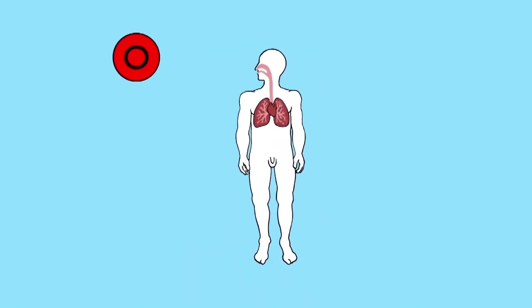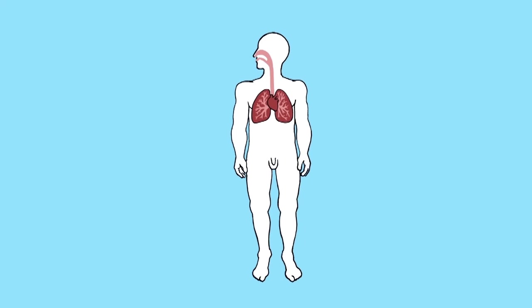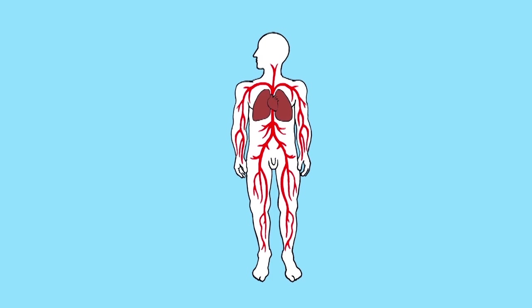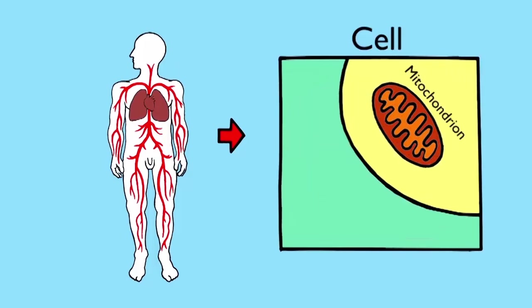Oxygen is used by the human body in a process called respiration. Take a deep breath in. Hold it for a few seconds. The air that entered your body has now been held in the lungs. Some of the oxygen you breathed in has been taken into the bloodstream and transported to parts of the body where it's needed. Respiration is taking place in the cells of your body.